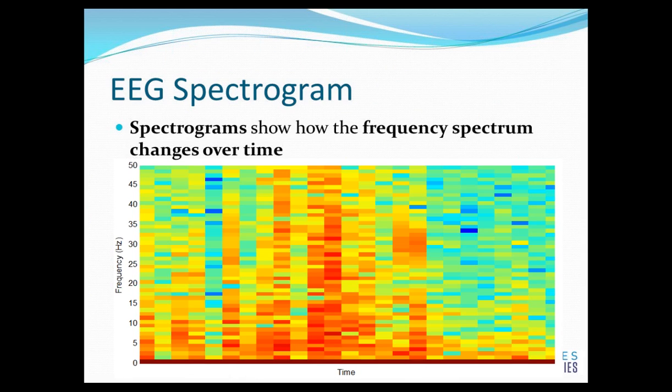The spectrogram is a tool that we can use to observe how the frequency spectrum changes over time. So in this example, we have time on the x-axis and frequency on the y-axis. The lower range, 0 to 4 Hz, corresponds to the delta band and the upper range, 30 to 50 Hz, corresponds to the gamma band. The color corresponds to the power at each of these frequencies. So again, we have a tool that we can use to visualize data and it makes it easy to make observations across all of the frequency bands and across time simultaneously.